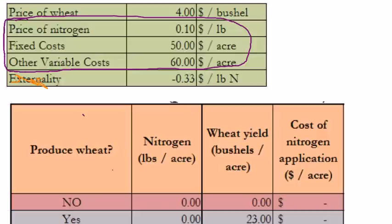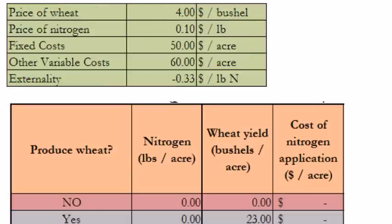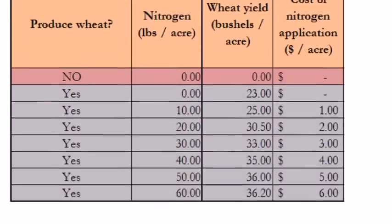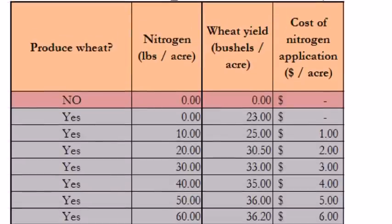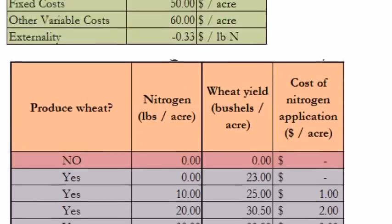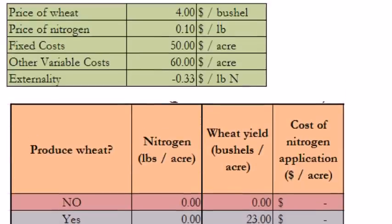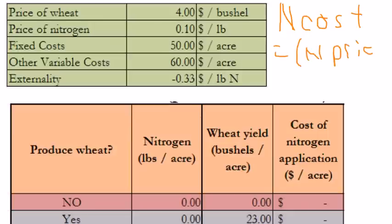Note that in this video, the externality row and the reprice row are irrelevant to us. Going back to our table, I've already calculated the cost of nitrogen application for each yield level, but let's look at exactly how I got these costs. It's pretty simple: the nitrogen cost equals the nitrogen price times the nitrogen applied.